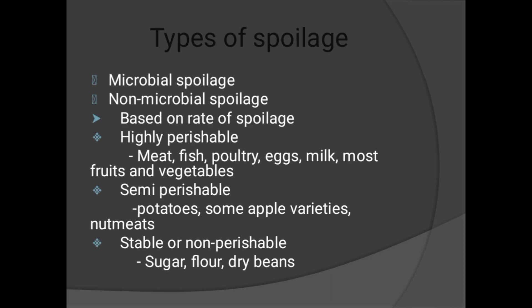Types of spoilage: microbial spoilage and non-microbial spoilage. Based on rate of spoilage — highly perishable: meat, fish, poultry, eggs, milk, most fruits and vegetables. Semi-perishable: potatoes, some apple varieties, nut meats. Stable or non-perishable: sugar, flour, dry beans.